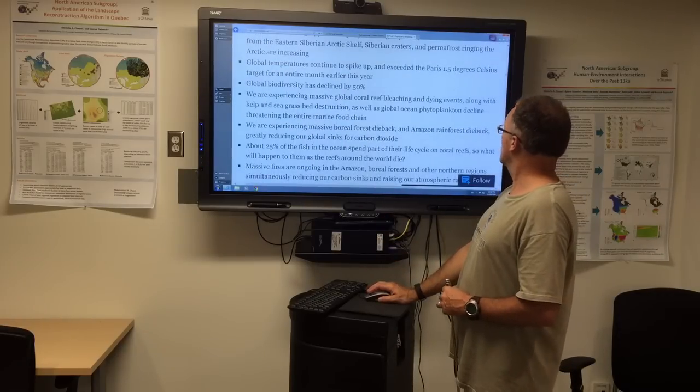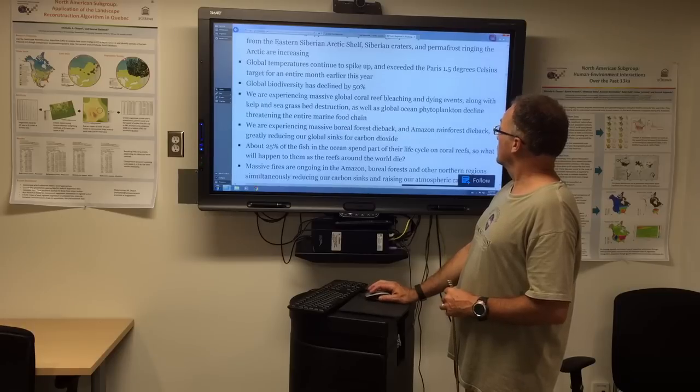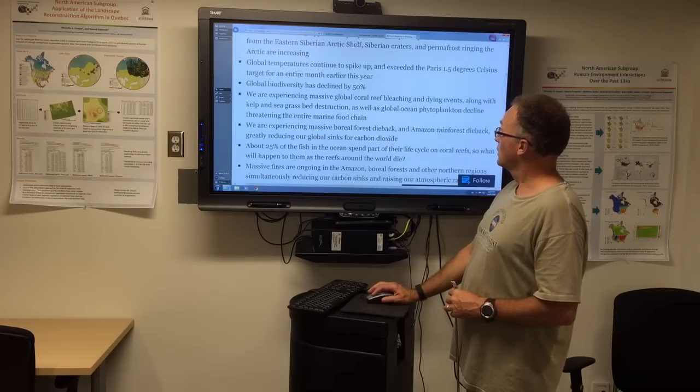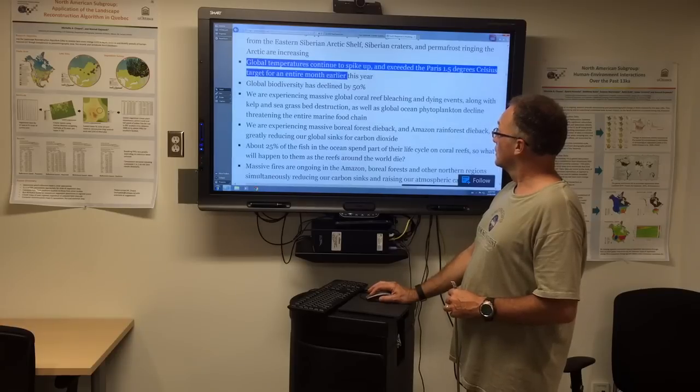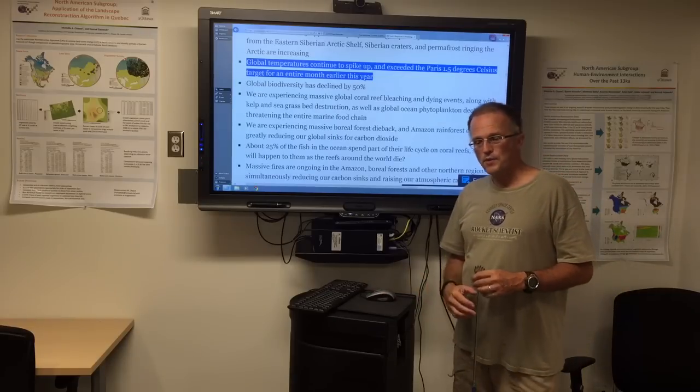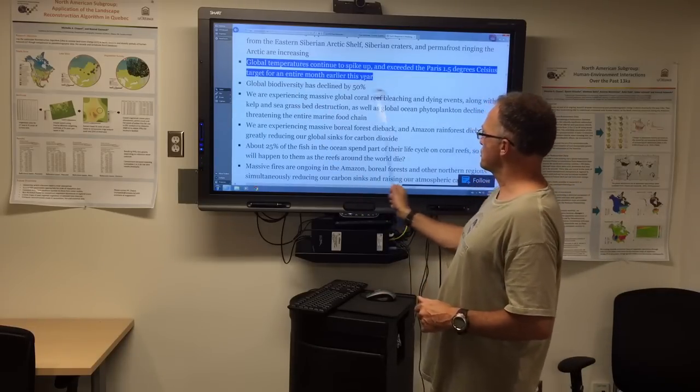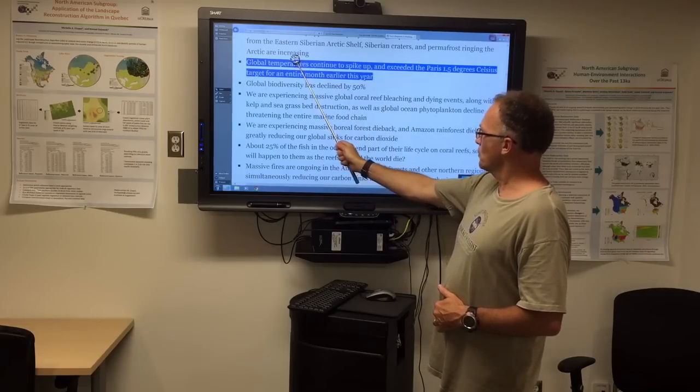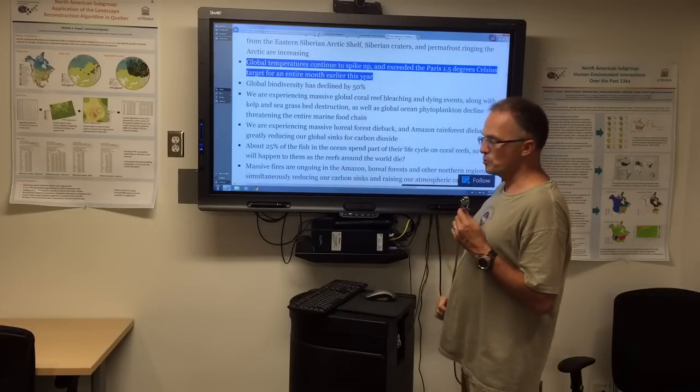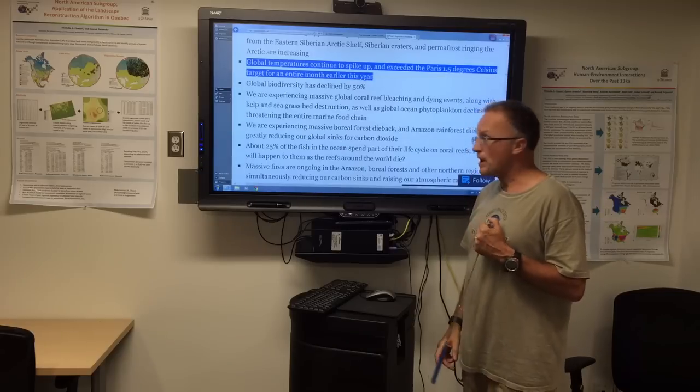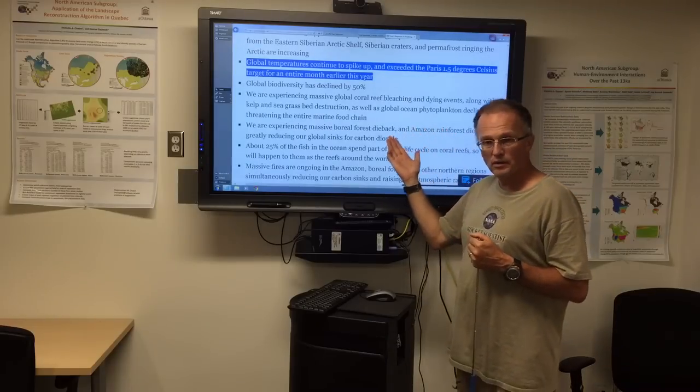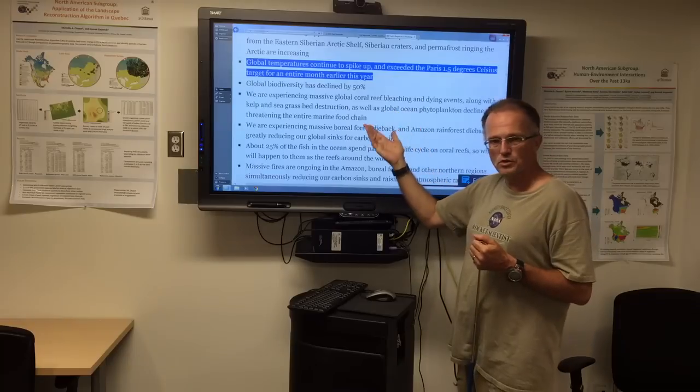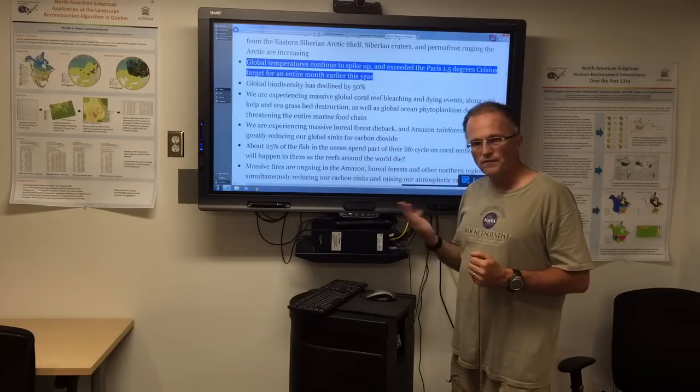Global temperatures continue to spike up and exceeded the Paris 1.5 degrees Celsius target for an entire month this year. Okay, so if you do plots of the temperatures of other years over time, and then you do 2016, we're way up here, we're way off the charts. We approached, we surpassed 1.5 degrees Celsius for an entire month. For a few days, we surpassed two degrees Celsius. So the 1.5 and the two degree numbers from Paris are really fantasy.